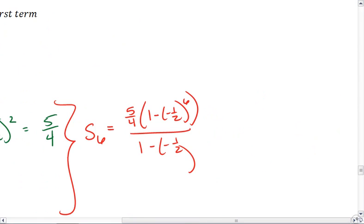This gives me, up top I get 5 fourths times 1 minus 1 sixty-fourth. And then in the denominator, I get 3 halves.